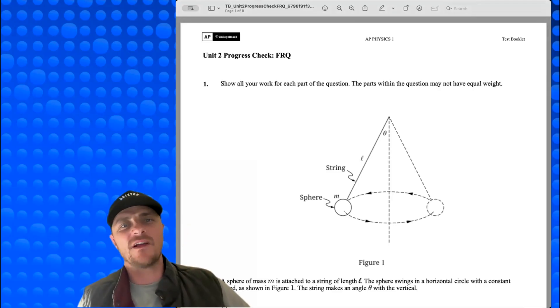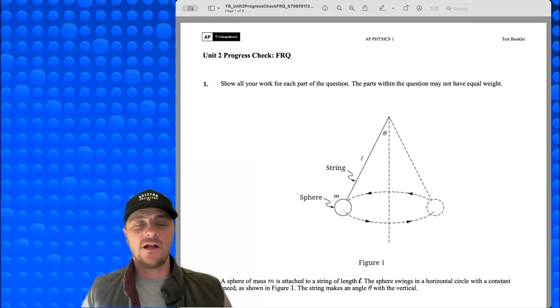AP Physics students, you found the right place. This is Mr. Heinrich. We're looking at another progress check from AP Classroom, Unit 2, number 1. Let's check it out.